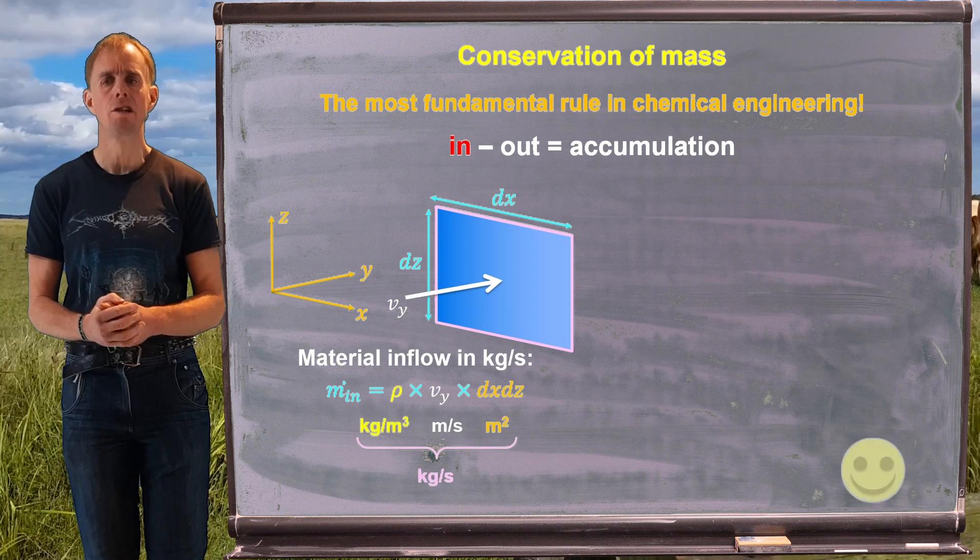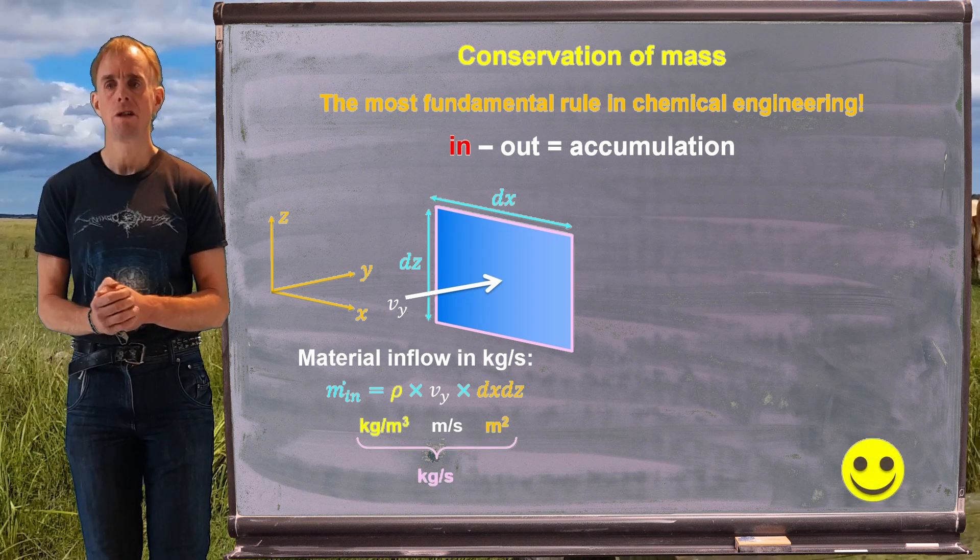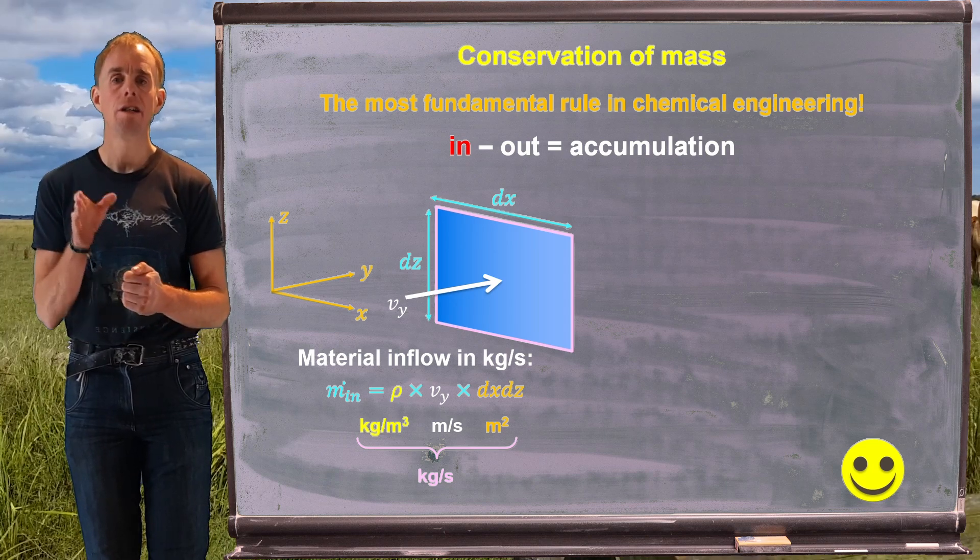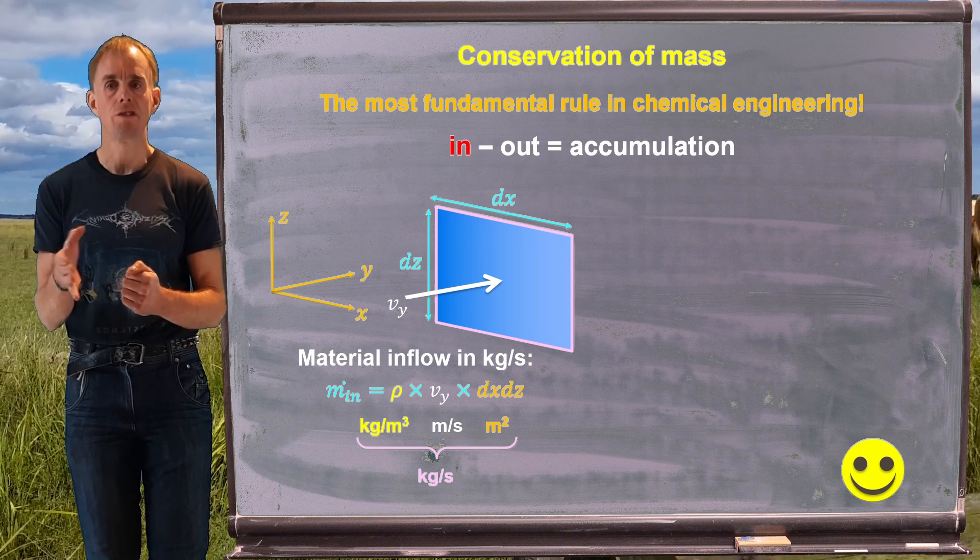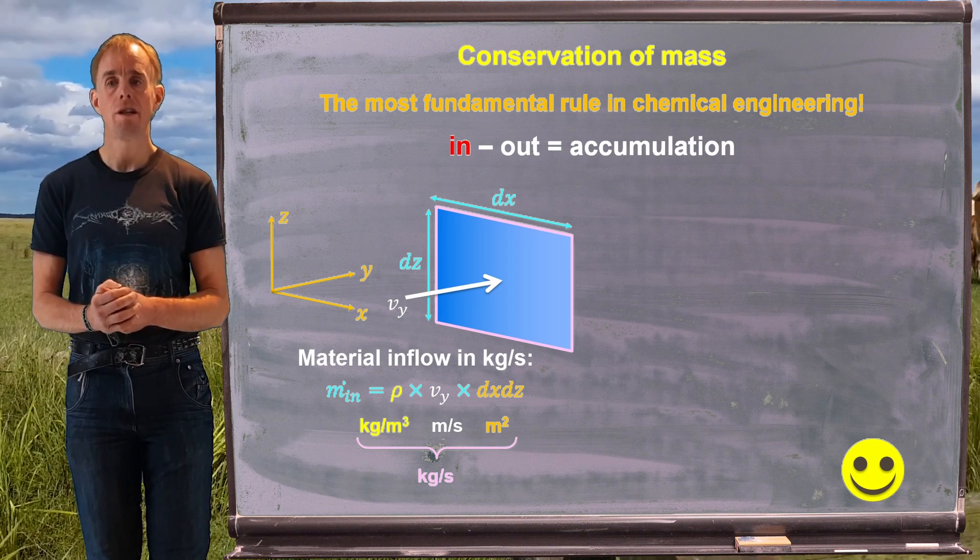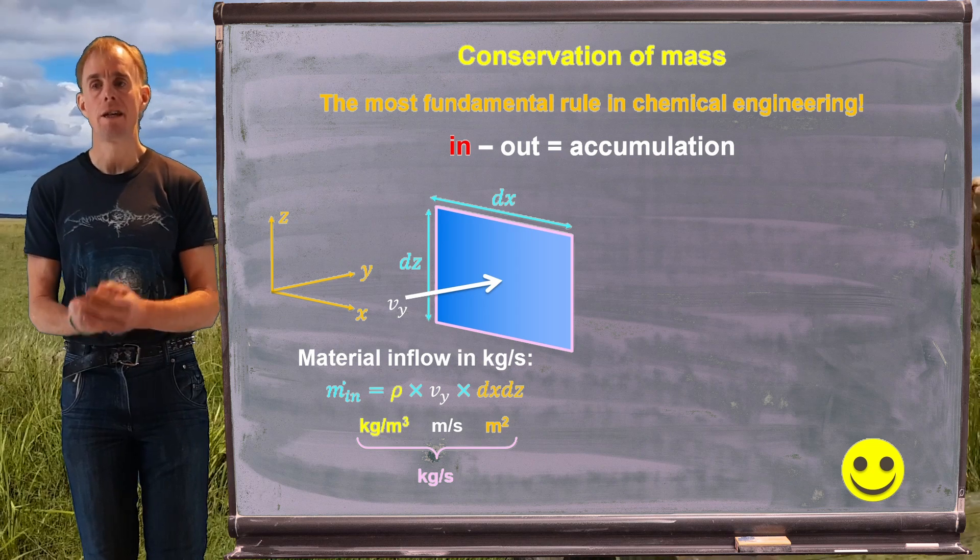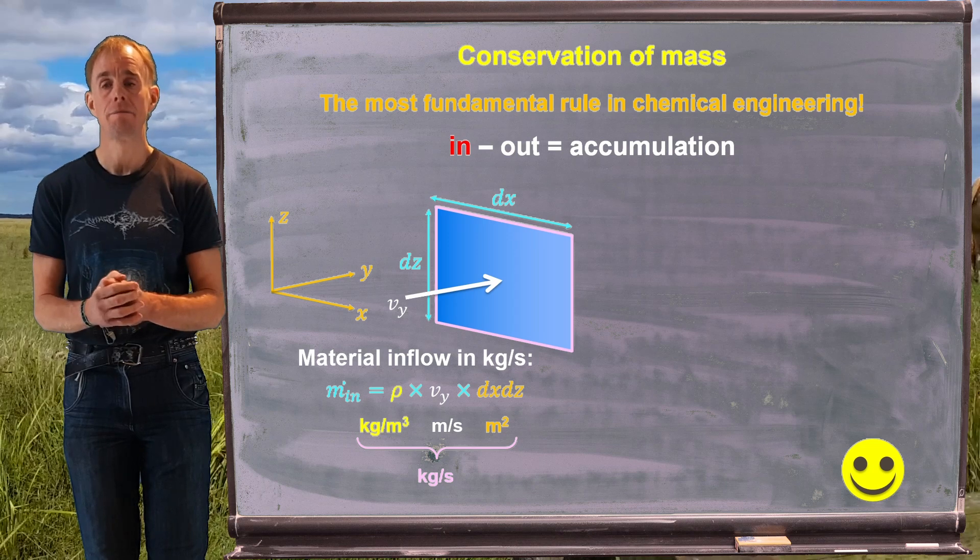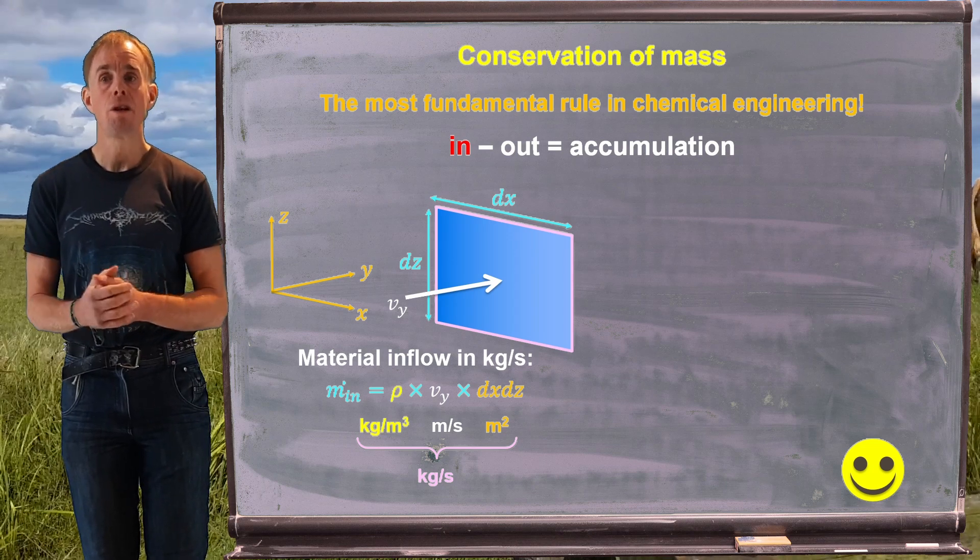Let's just examine those units a little more closely. Rho is kilos per cubic meter, vy is meters per second, and area is meters squared. That's the product of dx and dz. And so we can see that if we look at those three sets of units in a product we simply end up with kilos per second. So indeed we do have a mass flow through that face. Right, so that's the mass flow into the cube.